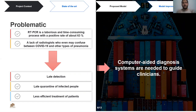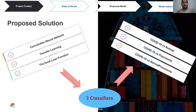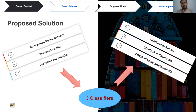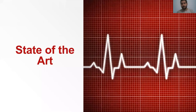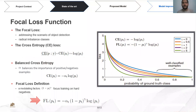Computer-aided diagnosis systems can assist clinicians and help them make decisions. The proposed model combines a convolutional neural network, transfer learning, and the focal loss function to build three classifiers: COVID-19 versus normal, and COVID-19 versus pneumonia. In the next part, I will explain the most important key concept used in the proposed model, which is the focal loss function.